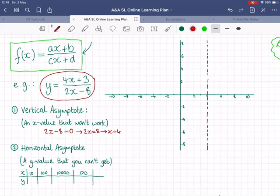Then the horizontal asymptote. So this is a y value that's never going to be on our graph. So basically something that the whole function can never equal. Whatever x we choose, there is going to be one y value that it's just not possible to get. And one quite simple way of finding this is to start plugging in very big values of x.